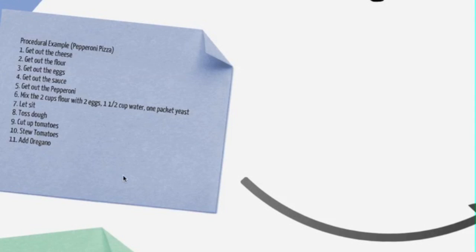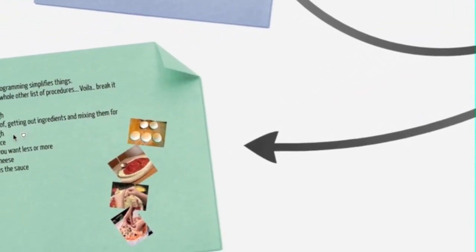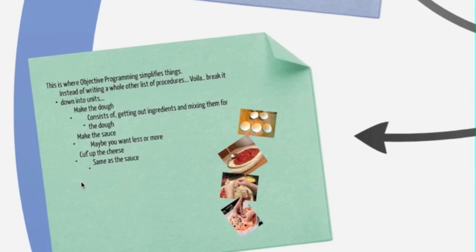For example, I took the idea of the restaurant and broke it into units, then broke up the units of making the pizza. Instead of writing the whole procedural code, I just need to change the toppings area. This is where objective programming simplifies things - instead of writing a whole other list of procedures, you break it down into units.